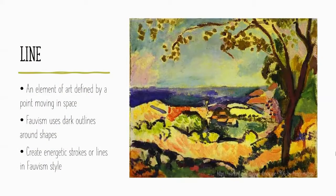Line is an element of art that essentially refers to a point moving through space. Fauvism uses dark outlines around shapes, so line is really important in this type of work. You can create energetic strokes or lines in this type of style.